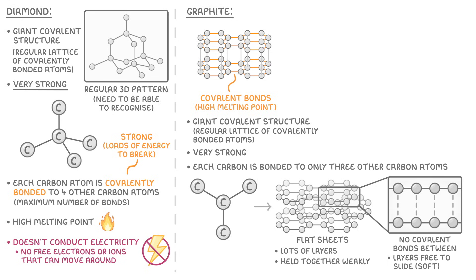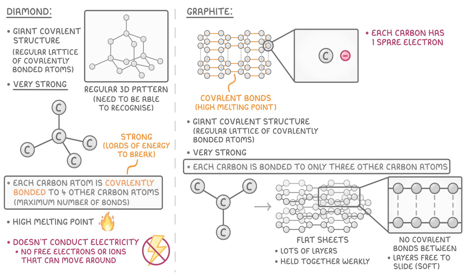Now remember how earlier we said that carbon atoms can make four covalent bonds each, but in graphite they only make three. Well that means that each carbon atom in graphite has one spare electron that it's not using in bonding. Instead, this electron becomes delocalized, which basically means that it's free to move around. And all of these free electrons allow the graphite to conduct electricity and heat.